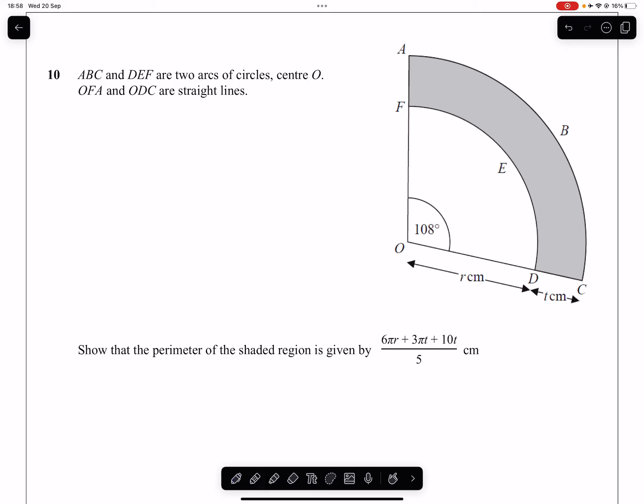Question 10. We have two arcs ABC and DEF shown in our diagram. I'm just going to color code them. We are given an angle of 108 degrees for both of these arcs. We're given the radius of the small arc, the pink one, and we're given the difference between the two arcs T.